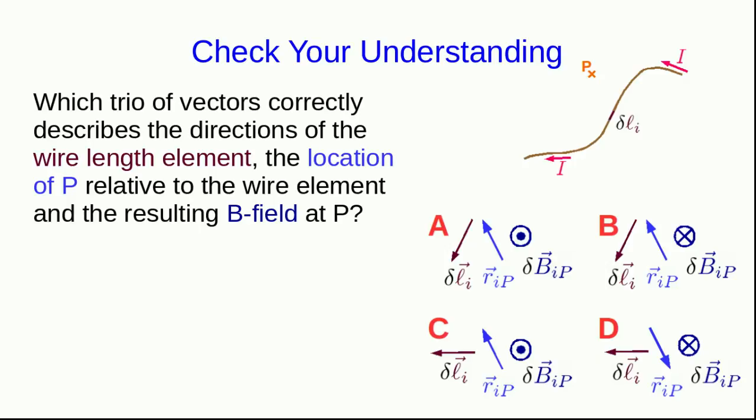Here's a wire, and I've shown which way the current is going in the wire, and a point P, and you should decide which of these trios of vectors for the delta L vector, the R_iP vector, and the resulting magnetic field is correct.